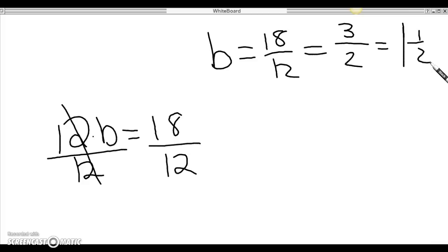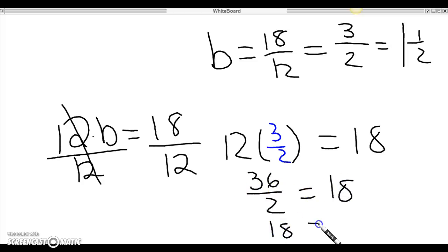And so I can check it out to make sure that it works. So I can do 12 and I can plug in 3 over 2. And when I plug in 3 over 2, I'm going to multiply. So 12 times 3 equals 36 divided by 2. 36 divided by 2 is 18. So it does in fact work out.